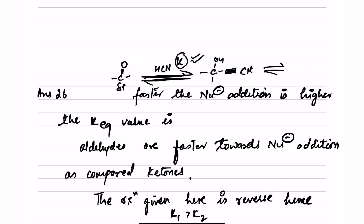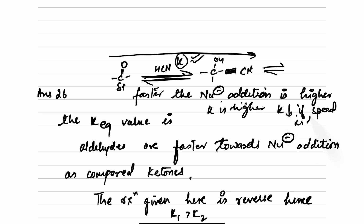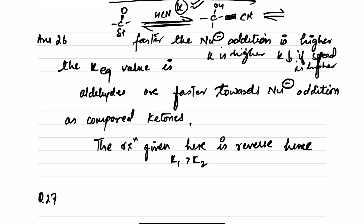In the normal forward direction, higher delta+ means higher K. In the backward (reverse) direction, higher delta+ means lower K. Here K1 is the equilibrium constant for cyanohydrin converting back to ketone, and K2 is for cyanohydrin converting back to aldehyde. Since ketones have higher delta+ than aldehydes, K1 is greater than K2 in this reverse reaction context.